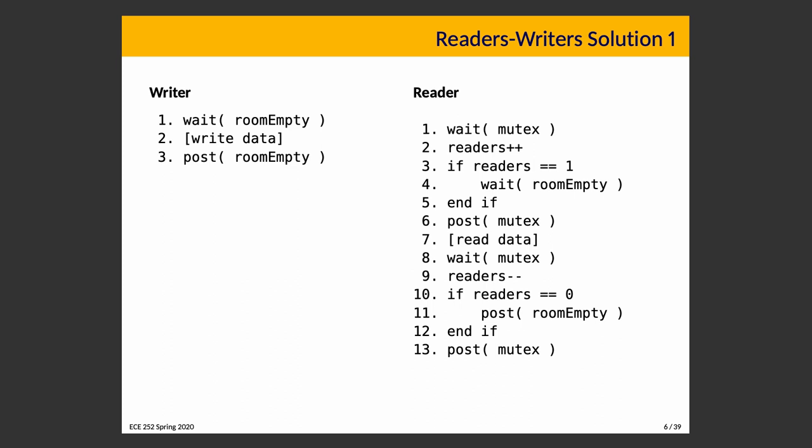The reader is more complicated. The reader waits on the mutex, increments the number of readers, and if readers is one, waits for room_empty. If we're not the first reader, we skip that step. We post on mutex, read some data, and when done reading, we wait on mutex again, decrement the number of readers. If readers is now zero, we post on room_empty indicating the room is empty, then unlock with post mutex.